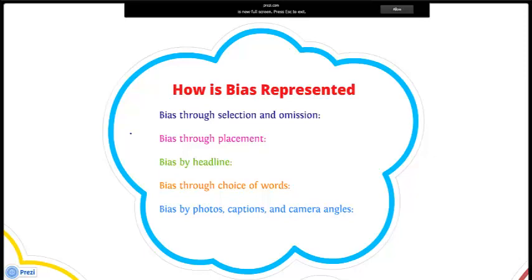Bias through selection and omission is where, by choosing whether to cover a specific news item, a news source communicates what it believes should matter to the public. Within a story, details can be ignored or included to give readers or viewers a particular view about the events reported.